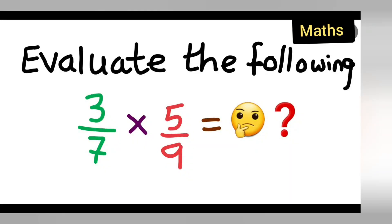Welcome to today's class of mathematics. Today's question is taken from class 7 mathematics from the fractions and decimals chapter. Today's question is: evaluate the following: 3 upon 7 multiplied by 5 upon 9.